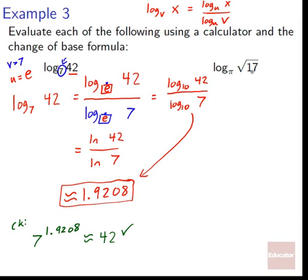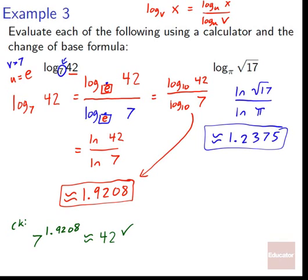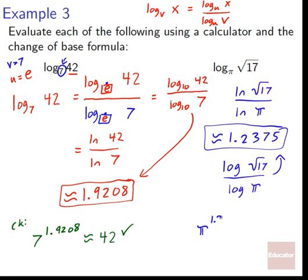For log base π of root 17, we apply the same formula: natural log of root 17 over natural log of π, which comes out to approximately 1.2375. Alternatively, log base 10 of root 17 over log base 10 of π gives the same result, approximately 1.2375. You could also check this: π raised to approximately 1.2375 does come out to be approximately root 17.